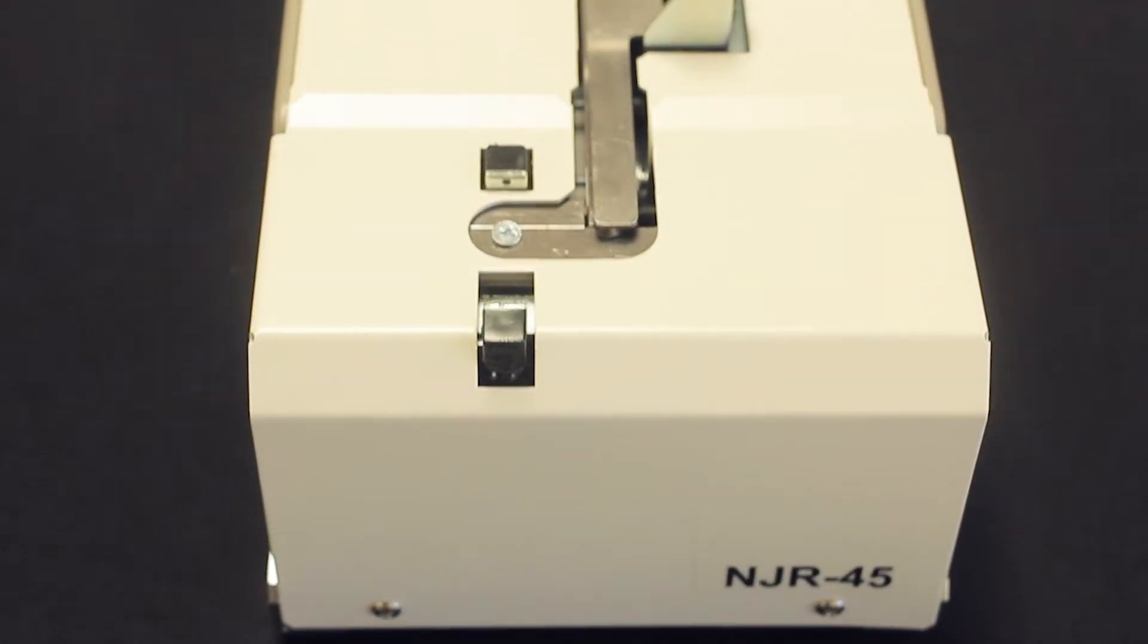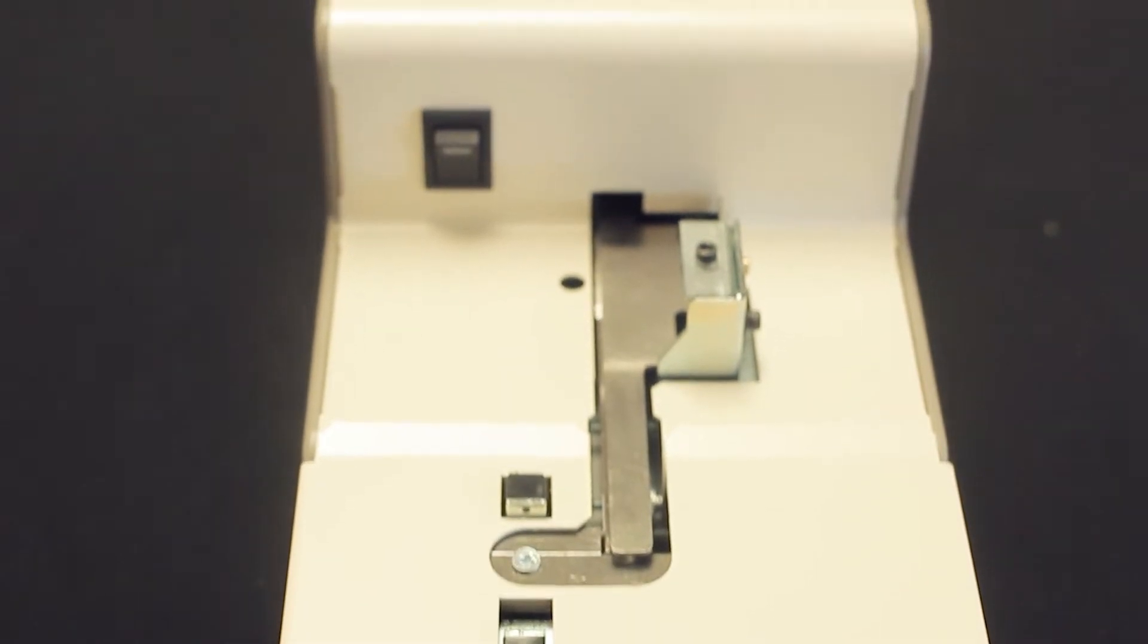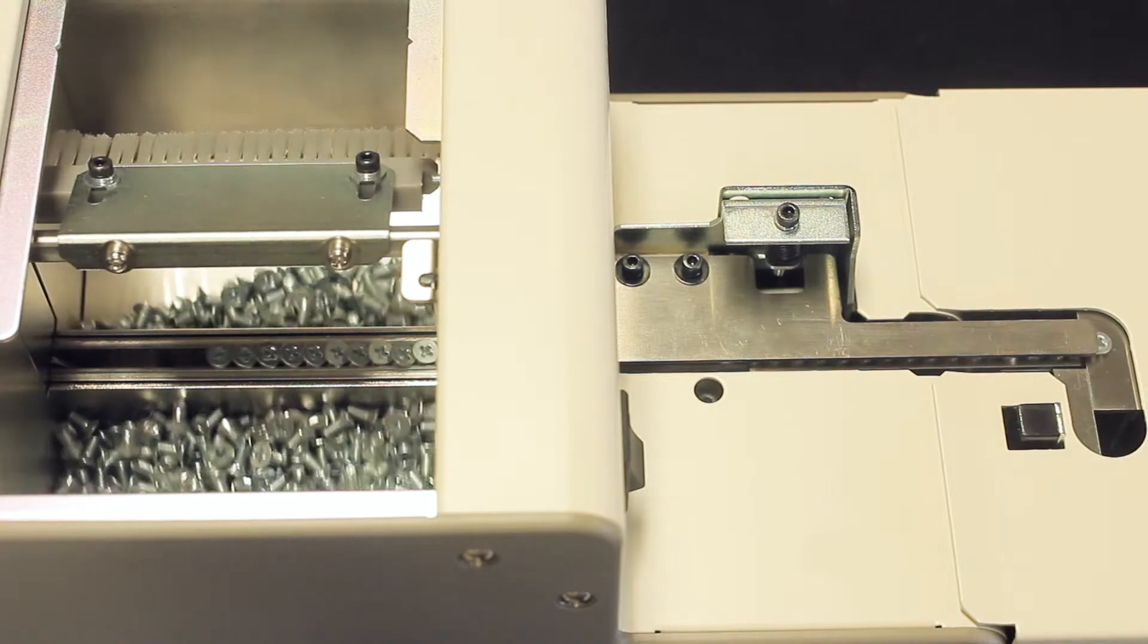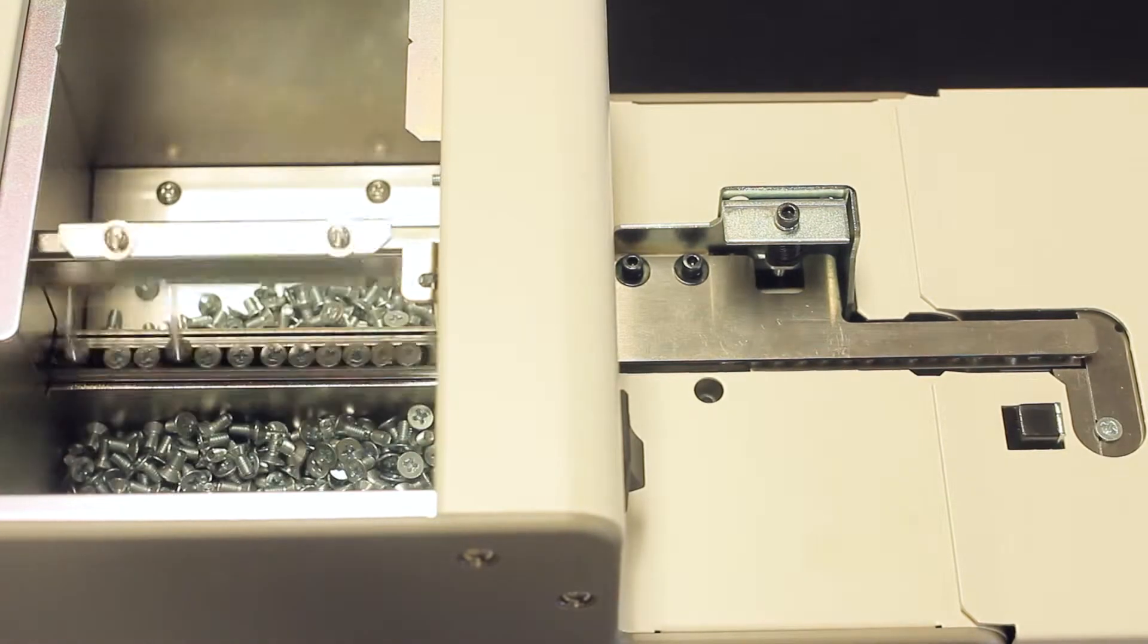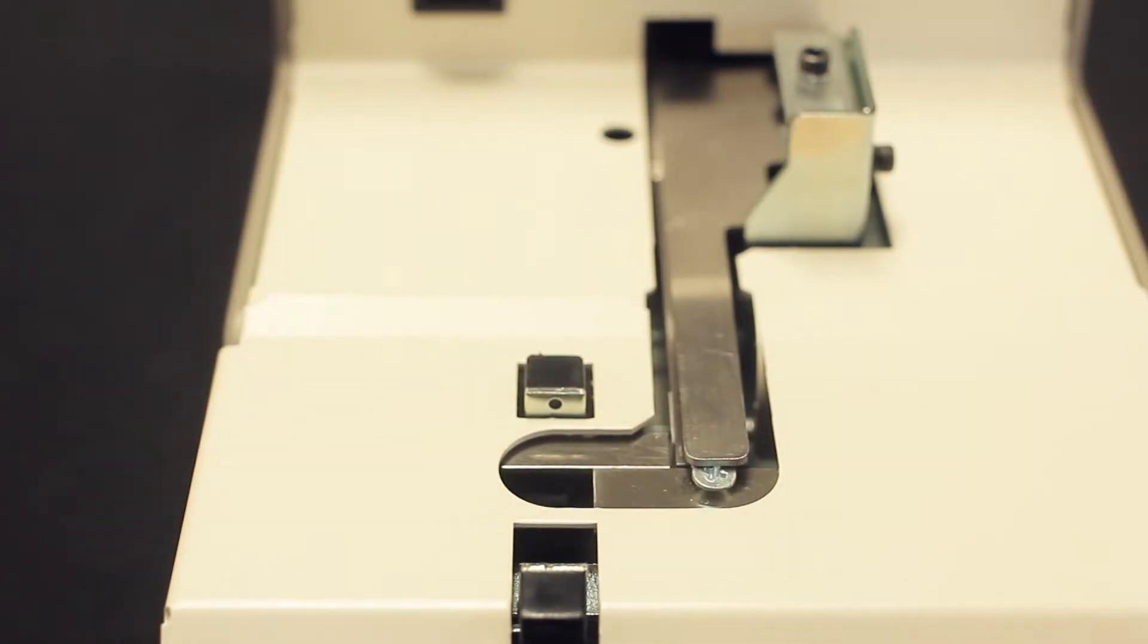The NJ series screw presenters also accommodate a wide variety of screws via interchangeable rails. The hopper has a 150 cubic centimeter capacity for number six to number ten screws. NJ is a standard manual screw presenter whereas the NJF is for flat head screws.